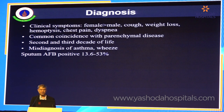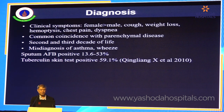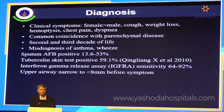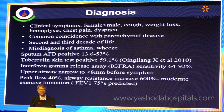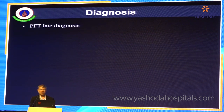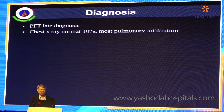Sputum AFB positivity is around 13 to 50%, and the tuberculin skin test is positive in 59%. The IGRA test is only sensitive in 64 to 92%. If patients have upper airway or tracheal involvement, lesions need to be less than 8 millimeters of the lumen before symptoms appear, at which point peak flow decreases to 40%, resistance increases to 600% with moderate exercise limitation, and FEV1 decreases to 75% predicted. So lung function testing is a very late diagnostic tool in this disease.